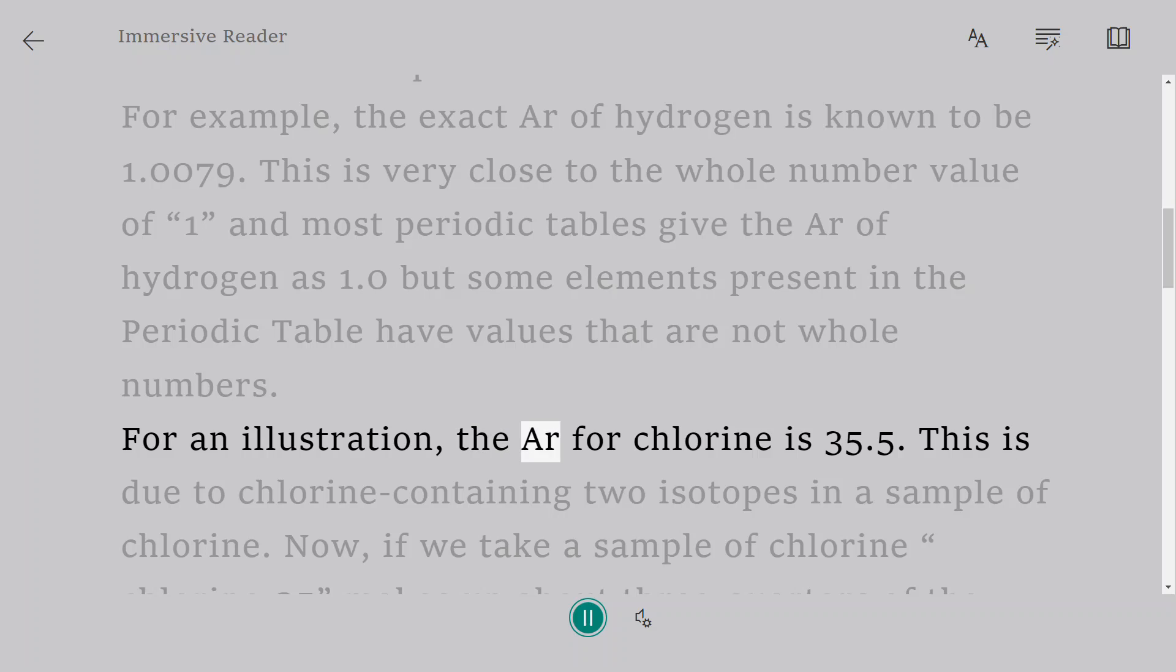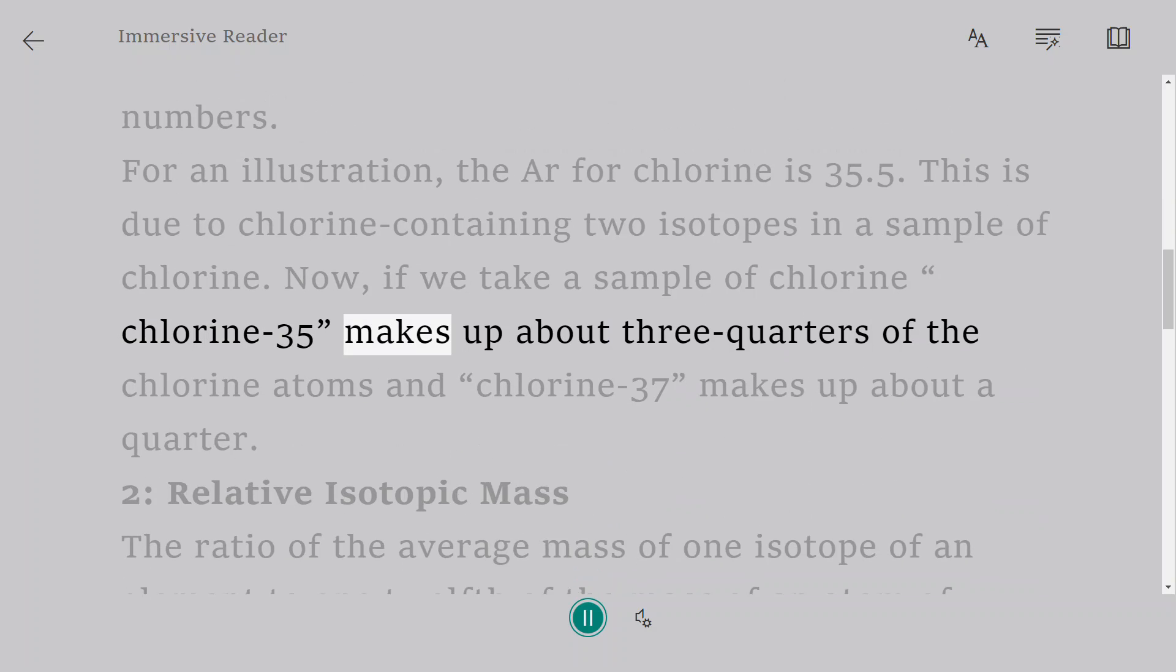For an illustration, the Ar for chlorine is 35.5. This is due to chlorine containing two isotopes in a sample of chlorine. Now, if we take a sample of chlorine, chlorine-35 makes up about three-quarters of the chlorine atoms and chlorine-37 makes up about a quarter.